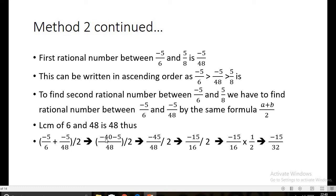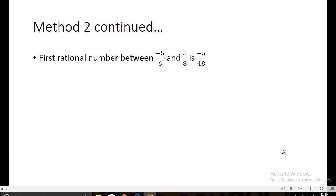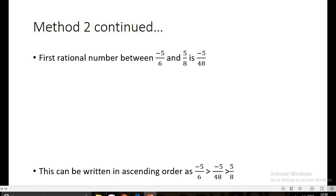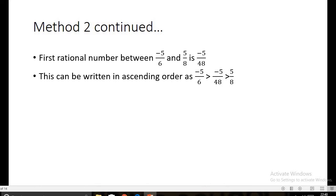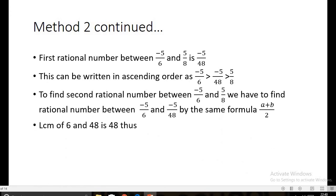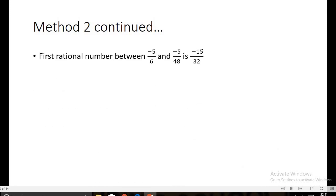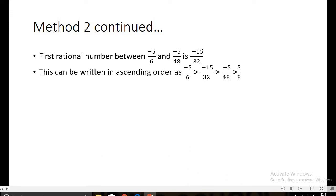Solving the bracket using the LCM of 48 gives (-40 - 5) / 48 = -45/48, divided by 2. Since 45 and 48 are both multiples of 3, we simplify to -15/16, then divide by 2 by multiplying by 1/2, giving -15/32. The ascending order is now: -5/6, -15/32, -5/48, 5/8.